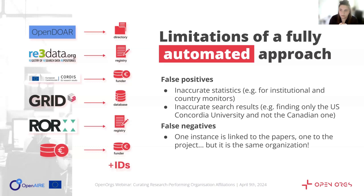Similarly, if we try to look at the big picture and consider all institutions in a country, we might not capture all the relevant services or products for each institution. When using a search tool like Open Air Explore to find information about a specific institution, we might end up with several entries that in reality refer to the same place, making it hard to get a clear and accurate understanding. On the other hand, false negatives can also cause similar issues — for instance, when different aspects of the same organization, like its research papers and projects, are treated as if they belong to separate entities, such as 'University of Zagreb' versus 'Zagreb University.'